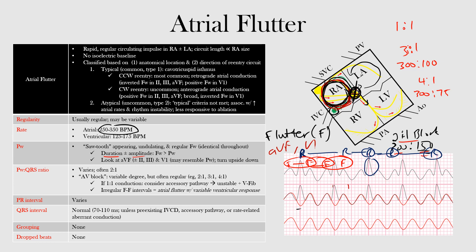Atrial flutter is classified into two forms. The first is the typical form, also referred to as the common type or Type 1. The second is the atypical form, also referred to as the uncommon type or Type 2. These classifications are based on two things: the anatomical location and the direction of the re-entry circuit.